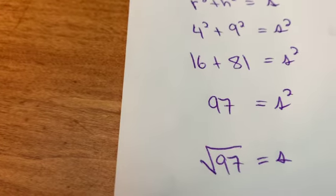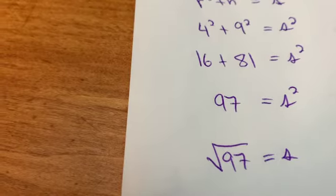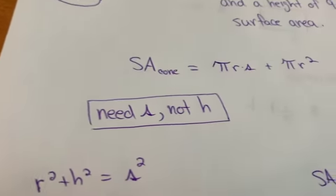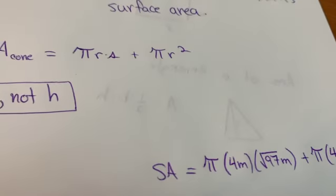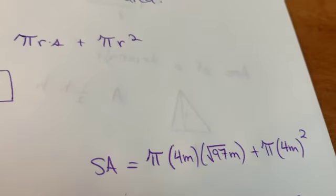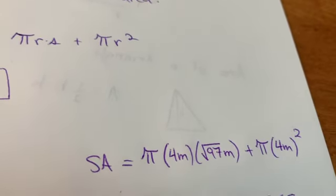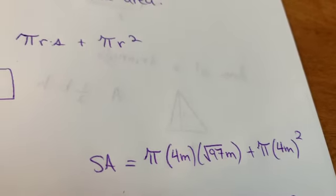Rather than write 9 point decimal, decimal, decimal, I'll leave it as √97. Now we can put the numbers into the surface area formula and say, okay, well, π times the radius times the slant height plus π times the radius squared.